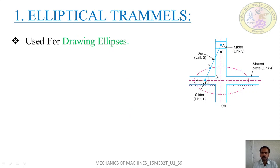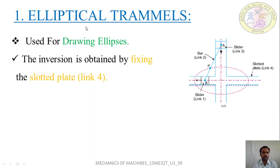This sketch represents the line diagram of the elliptical trammel. The elliptical trammel is used for drawing ellipses. This inversion is obtained by fixing the slotted plate, that is link 4. By fixing the slotted plate you get the inversion known as the elliptical trammel.